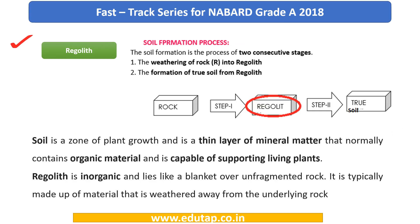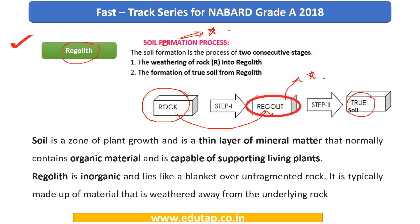Another important term is regolith. Soil formation is a process that takes place in two consecutive stages. First, there is weathering of rock. When this weathering process occurs, you get an intermediate product before the formation of true soil — that intermediate product is referred to as regolith. Soil itself is defined as a zone of plant growth — a thin layer of mineral matter that also contains organic material, and is capable of supporting living plants.